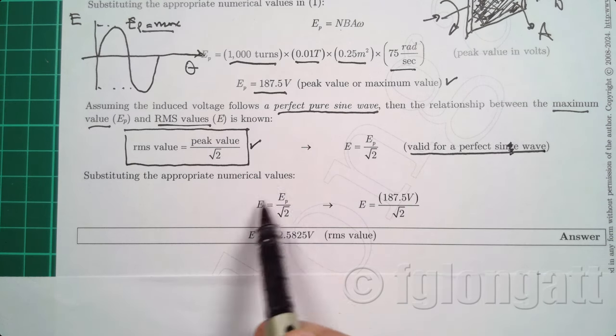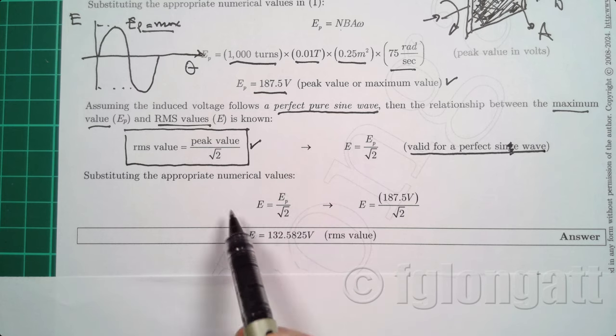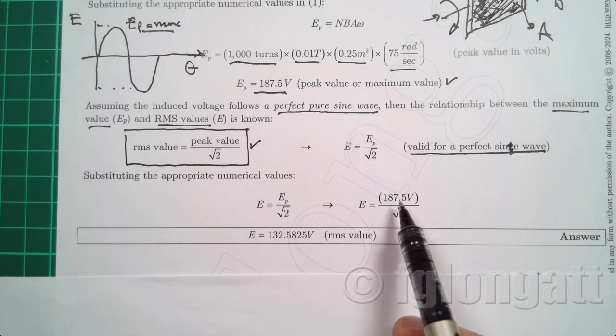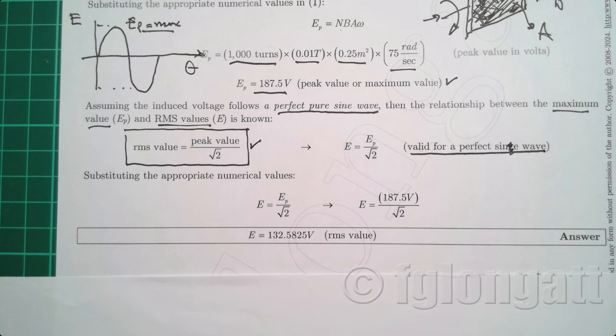So with the appropriate numerical substitution, the RMS value will be 187.5 divided by square root 2. And this is the brilliant answer that we were looking for to the question that we got. And the RMS value will be 132.5 volts.